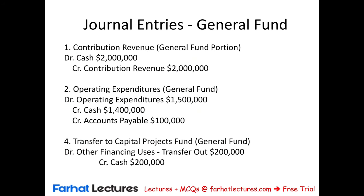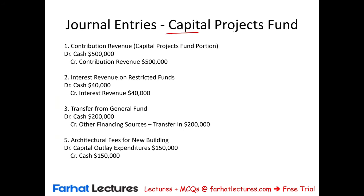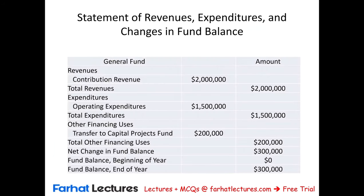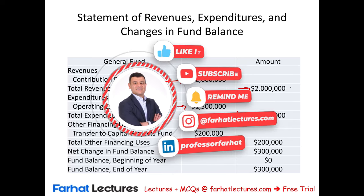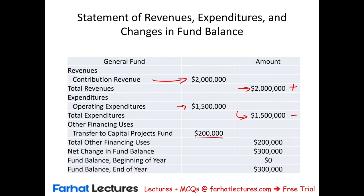Here is a summary of all general fund entries — transactions 1, 2, and 4 — and a summary for the capital projects fund — transactions 1, 3, and 5. For the general fund financial statements: revenues total $2 million, operating expenditure $1.5 million, and financing transfer out $200,000, leaving a net change of $300,000. Beginning fund balance is zero, so the ending fund balance is $300,000. This combines the income statement and statement of changes in fund balance for the general fund.